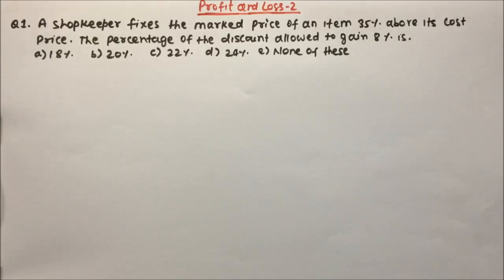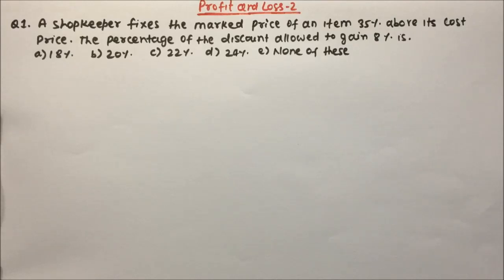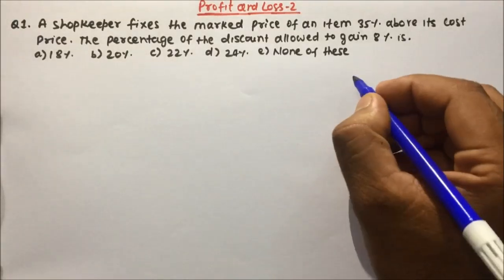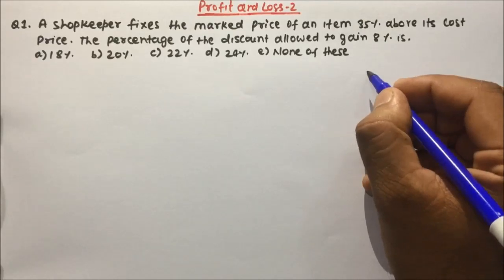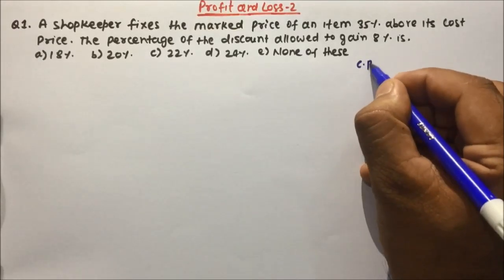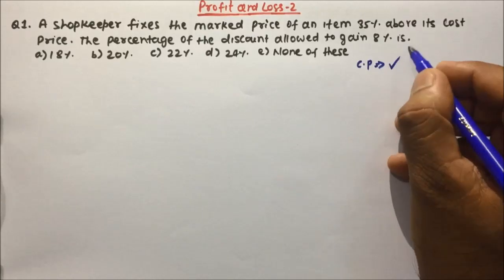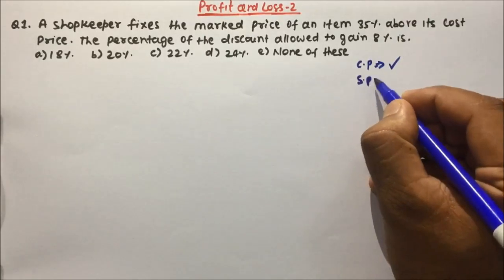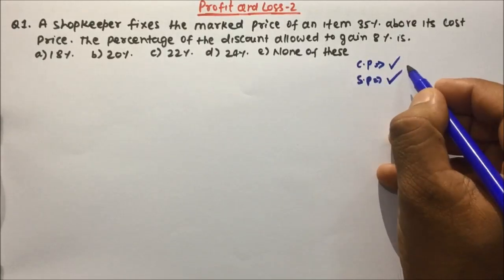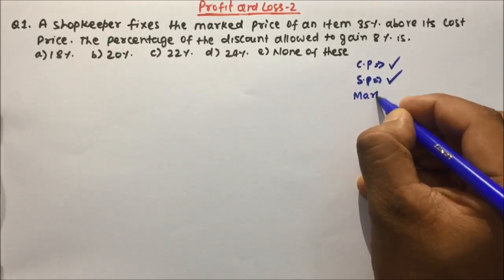Hi friends, our today's topic is profit and loss, and this is the second video on profit and loss. In this video we are going to learn the marked price, cost price, and selling price all three together, and what happens when we get a discount on the marked price. So let's understand the concept first and then we will try to solve the problems. Cost price is the price at which we buy the item; selling price is the price at which we sell the item.